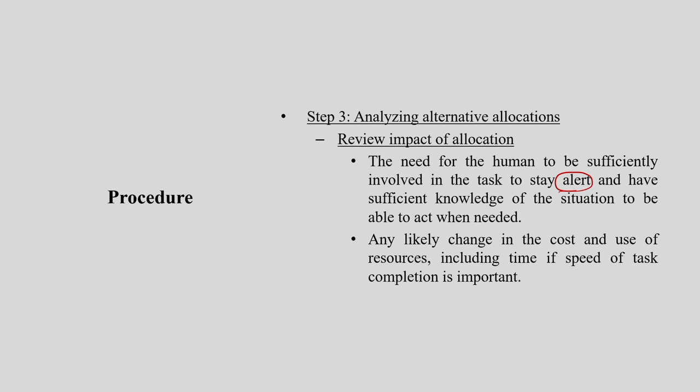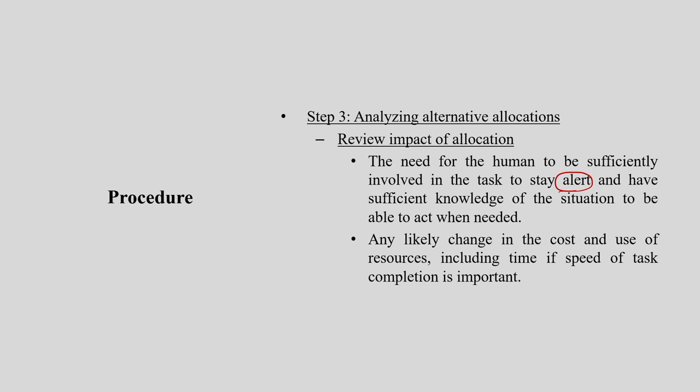Also consider the need for the human to be sufficiently involved in the task to stay alert. In very complex systems like air traffic control or nuclear power, if someone is not alert, there may be a big impact — an accident, a safety issue, a lot of cost involved. You need to understand situation awareness — how alert and knowledgeable the operators are in that particular situation.